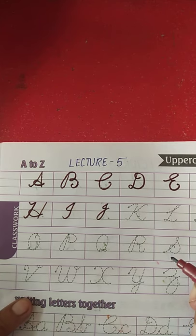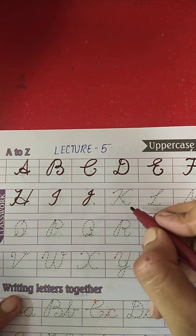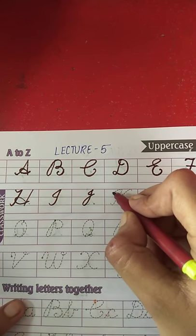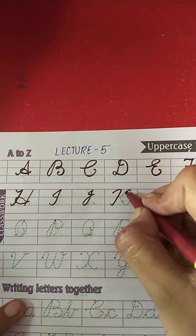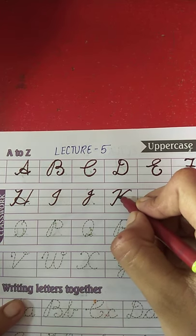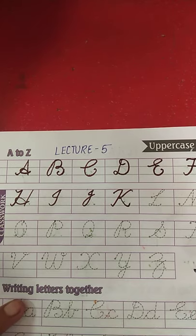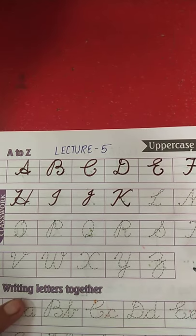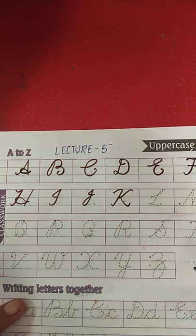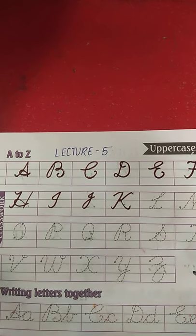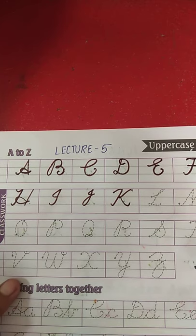J for joker ke baad kaunsa letter aata hai? K — K for kite. What is the spelling of kite? K-I-T-E. Kite.